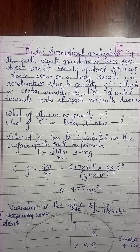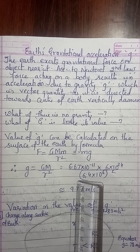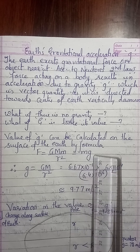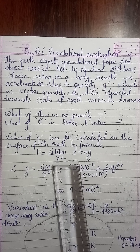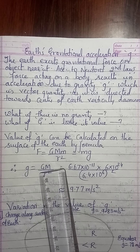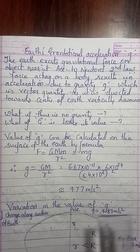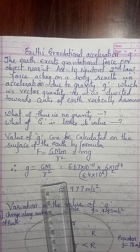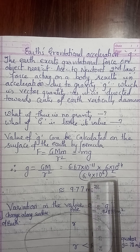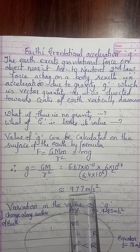Now, variation in the value of g. We can calculate the value of g on the surface of the Earth using the formula F = GMm/R², where F is also equal to mg. The small m cancels out, giving us g = GM/R². Here, capital G is the gravitational constant: 6.67 × 10⁻¹¹ N·m²/kg²; capital M is the mass of the Earth: 6 × 10²⁴ kg; and R is the radius of the Earth: 6.4 × 10⁶ m. After calculating, we get the value of g as 9.77 m/s².